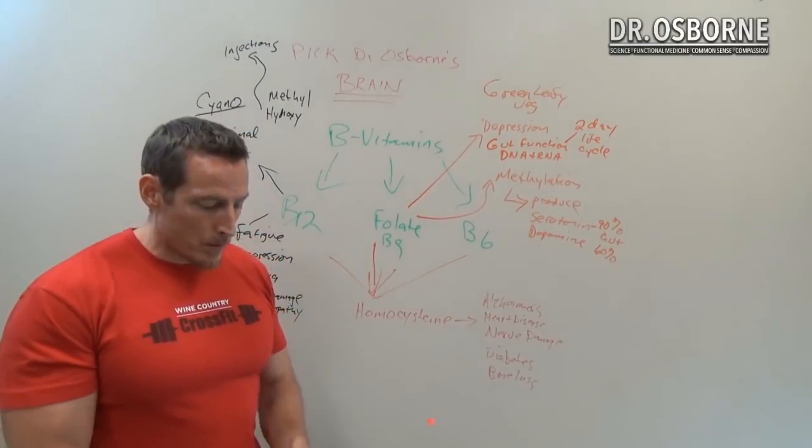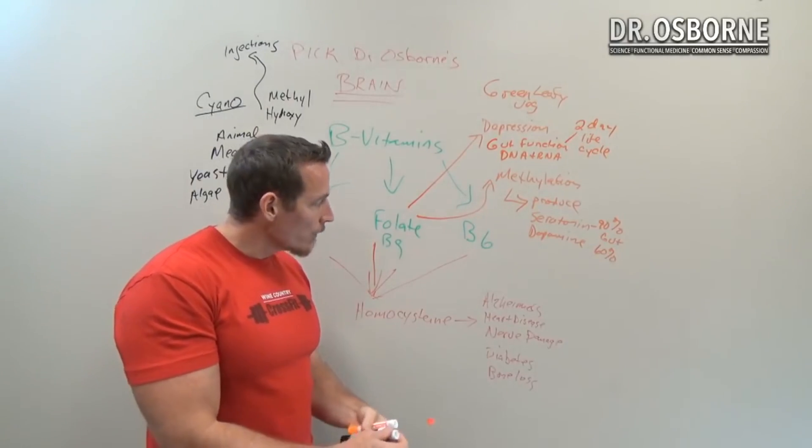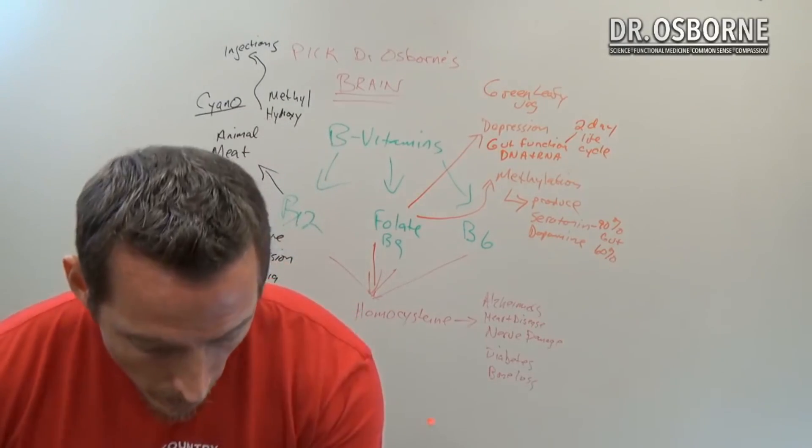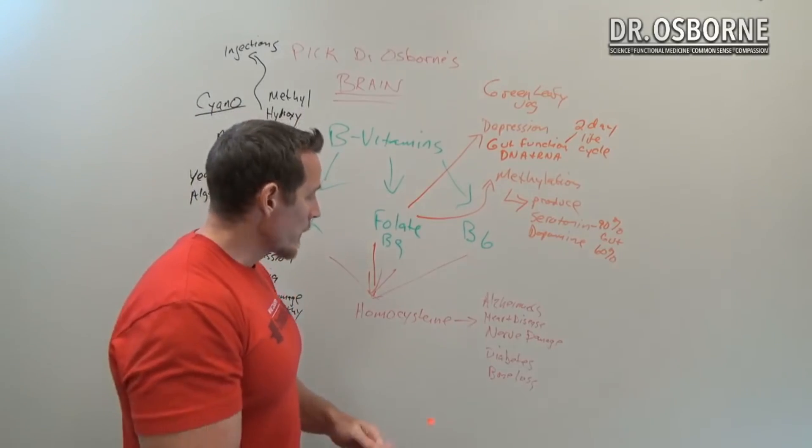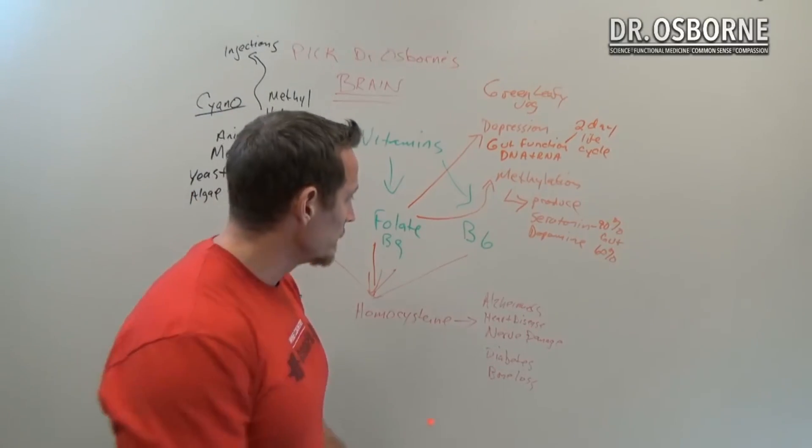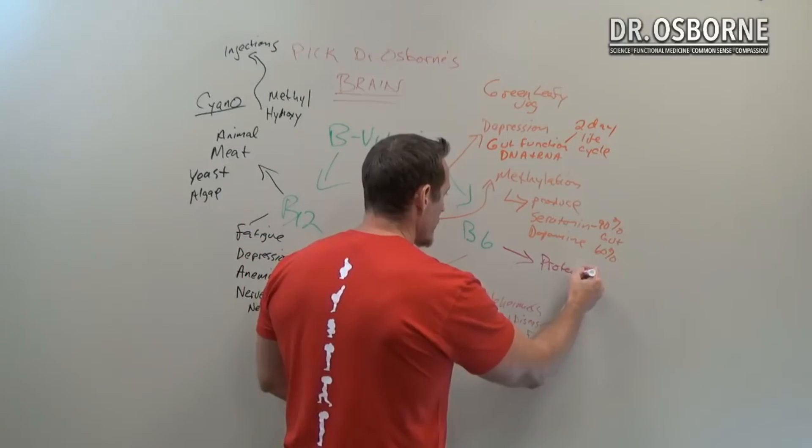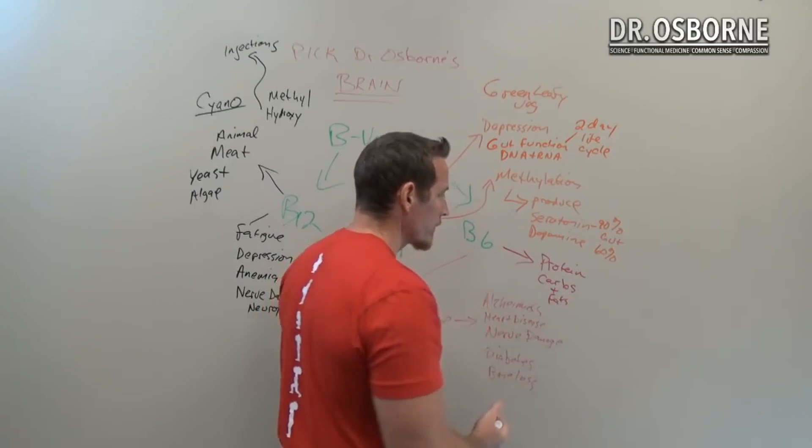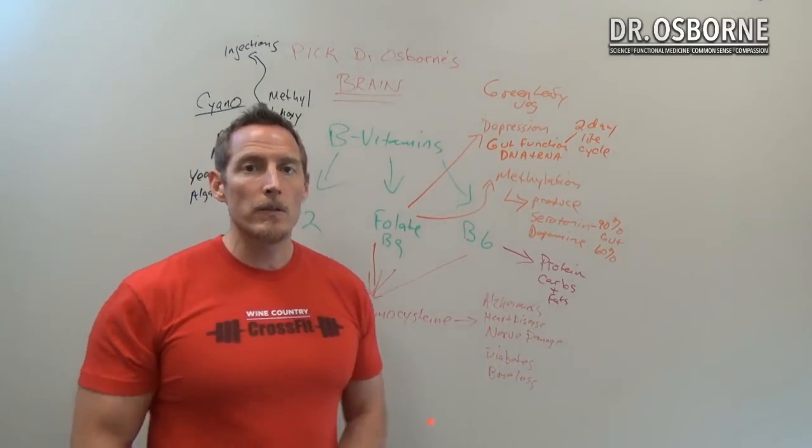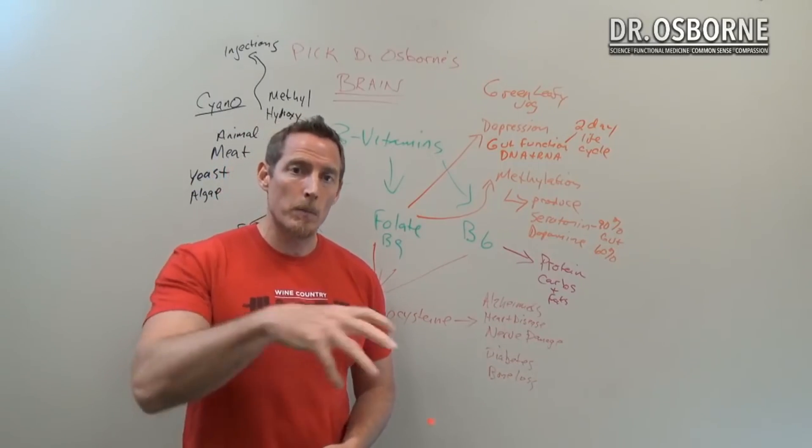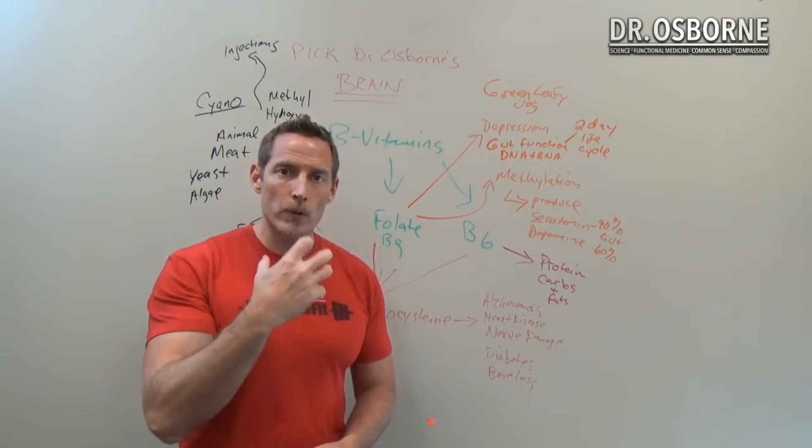Let's go into vitamin B6 now. Vitamin B6 is super important, and some of the reasons why: it plays a central role in how your body breaks down protein, carbs, and fats. You've probably heard the old saying, people talk about B vitamins being good for energy. Where do we get energy from? We get energy from our macronutrients—our proteins, our carbs, and our fats.